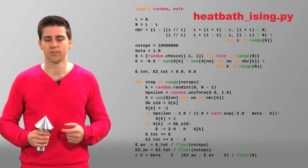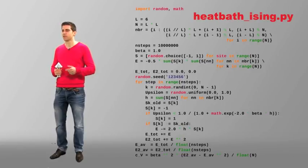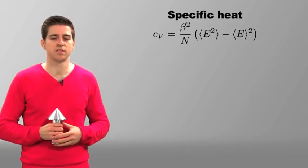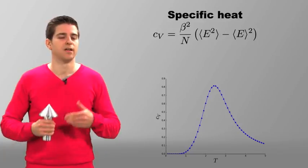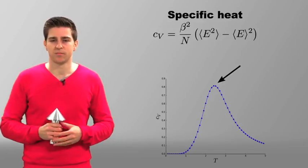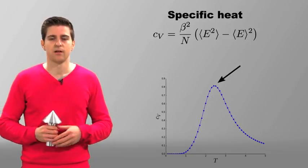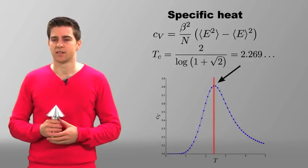In Python, this gives the very short program heatbath_ising.py. In this program, we keep track of and update the energy E, so that we can easily obtain the specific heat Cv of the system as a function of temperature. And we see its characteristic peak, which indicates the ferromagnetic-paramagnetic phase transition, which takes place at a temperature Tc, which we know exactly.